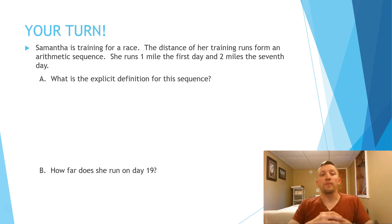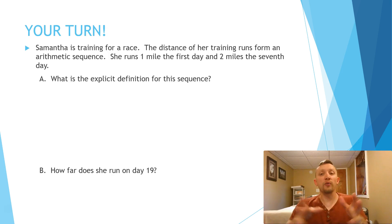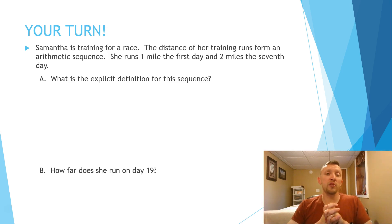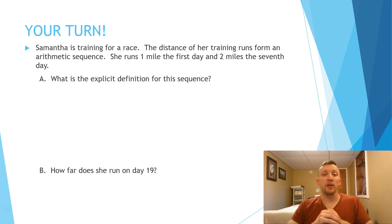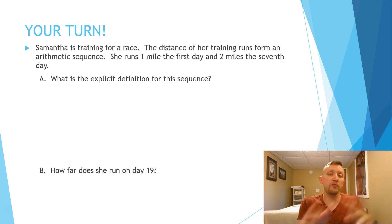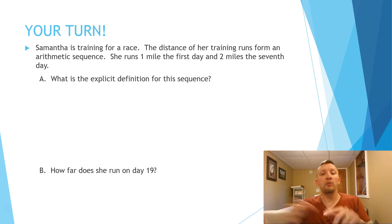How about you try one on your own. Samantha is training for a race. The distance of her training runs forms an arithmetic sequence. She runs 1 mile the first day and 2 miles the 7th day — similar setup to the previous problem. She's not adding a whole mile each time; she's adding a fraction of a mile. Your constant difference is going to be a fraction, so please leave it as a fraction for accuracy. Pause the video and hit play when you're ready to check.